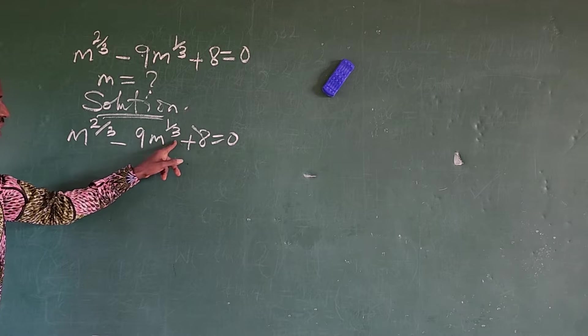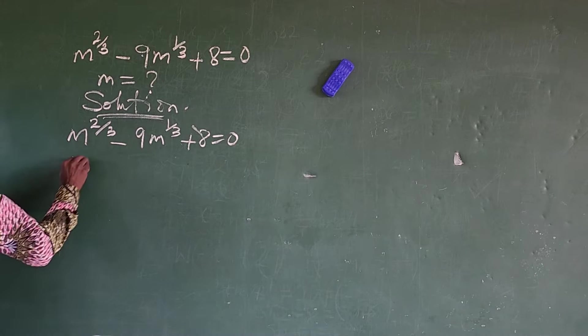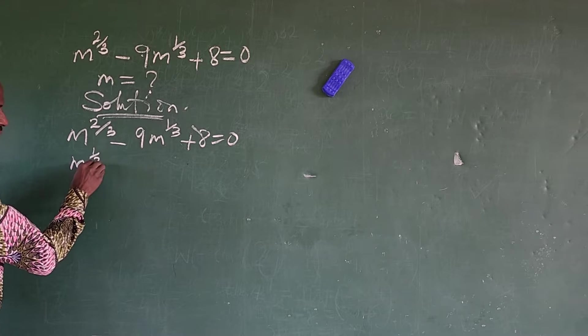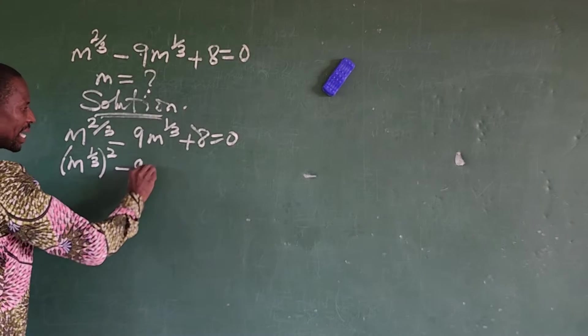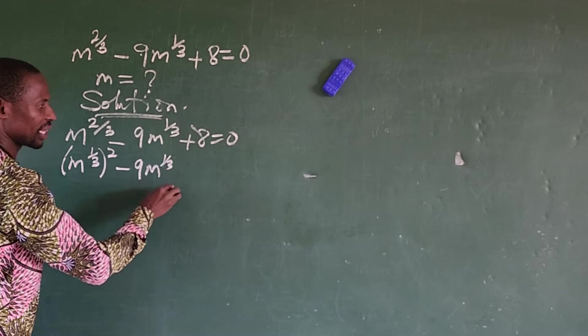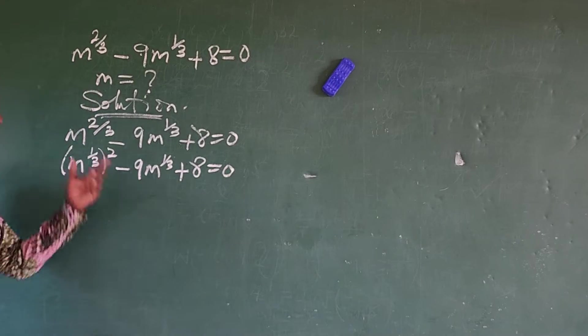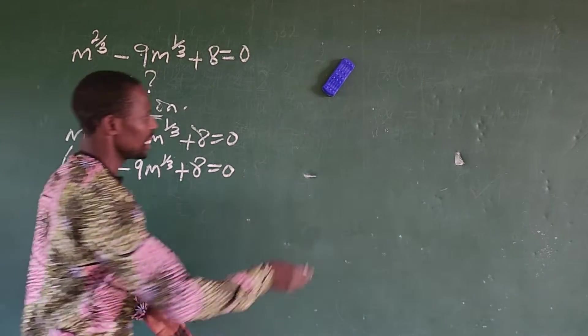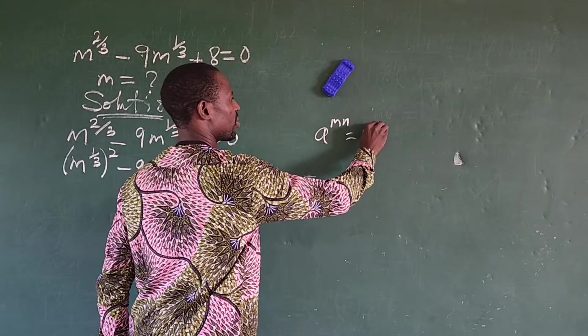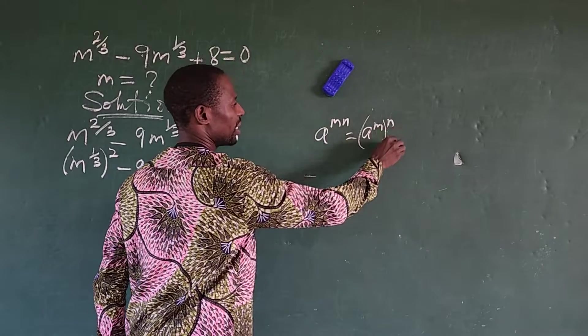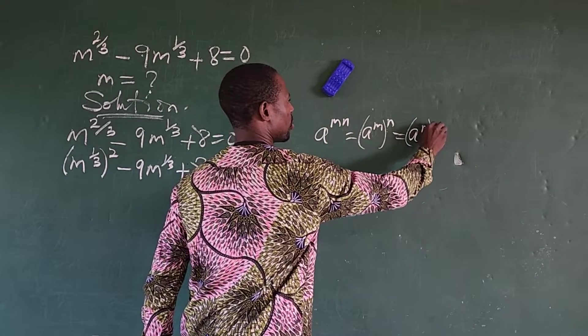So we can separate this power here. Since we are having 1 over 3, let's try to bring out 1 over 3 here. So we can rewrite this as m to the power of 1 over 3 all to the power of 2 minus 9m to the power of 1 over 3 plus 8 equals 0.